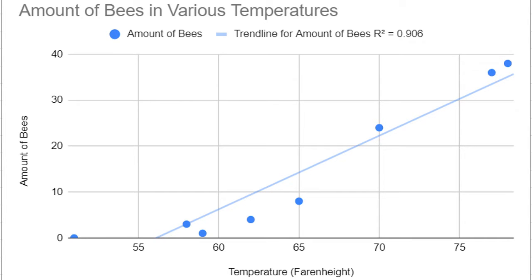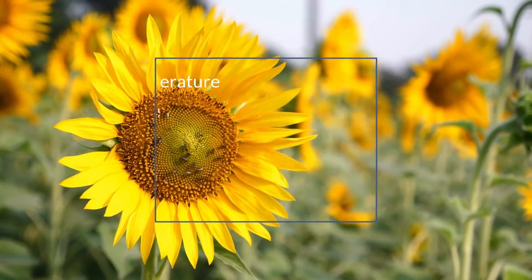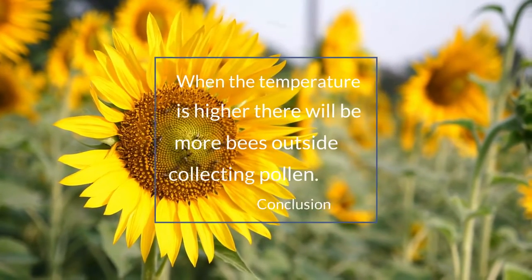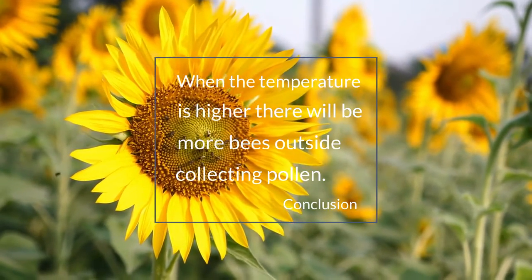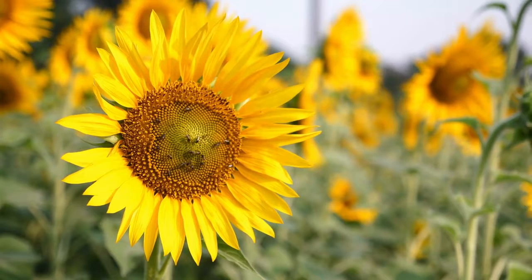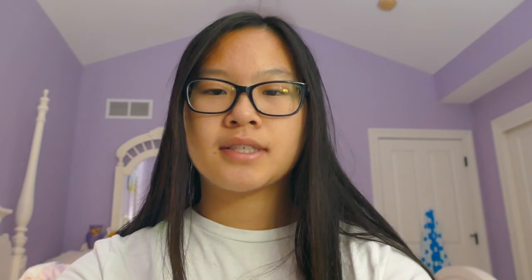This graph shows a strong positive correlation between the temperature and the amount of bees collecting pollen. This means that when the temperature is higher, there are more bees outside collecting pollen. I can conclude that when the temperature is higher, there will be more bees outside collecting pollen, as you can see from my scatter plot that there is a positive direct relationship between the temperature and the amount of bees outside.